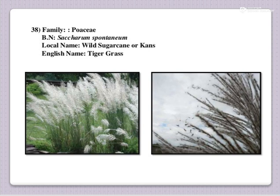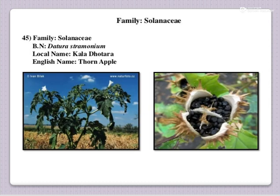Wild sugarcane — common name, English name is tiger grass and botanical name is Saccharum spontaneum, under the family Poaceae. This is wild sugarcane. Then next one: local name is Kala Dhotra, English name thorn apple and botanical name is Datura stramonium, family Solanaceae.